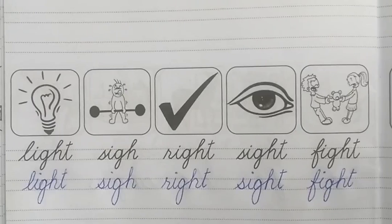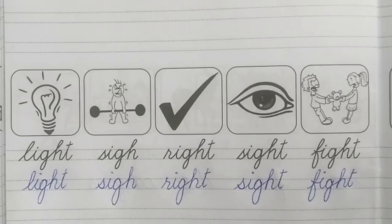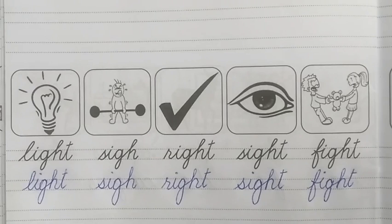Okay students, this is enough for today. Now it is time to give you homework, and the homework is: complete pages 23 and 24 of Iqra joint handwriting 2. Okay students, take care of yourselves. May Allah bless you. We will meet inshallah tomorrow with the next lesson. Assalamu alaikum wa rahmatullah.